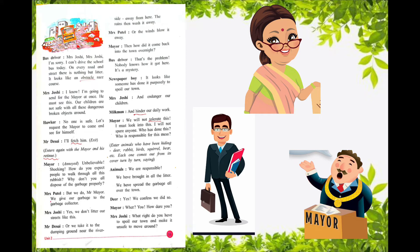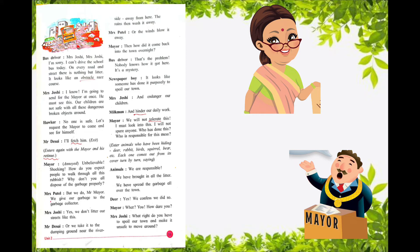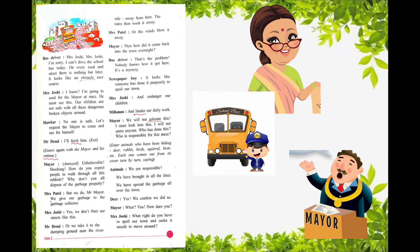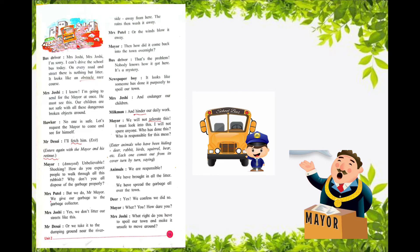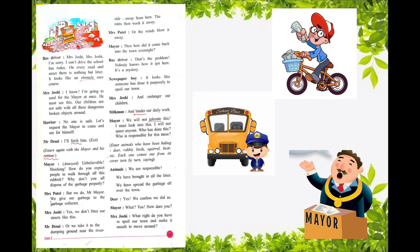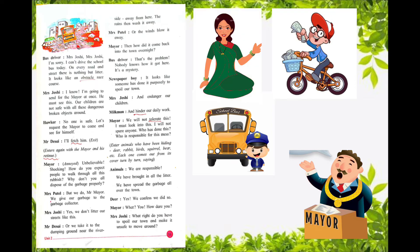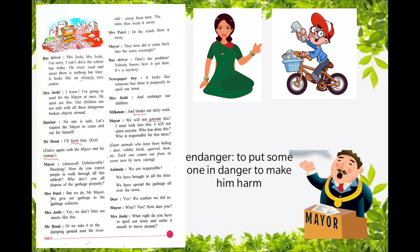The mayor asked, 'Then how did it come into the town overnight?' The bus driver said, 'That's the real problem — nobody knows how it got here. It's a mystery.' The newspaper boy said, 'It looks like someone has done this purposely.' Mrs. Joshi said, 'And to endanger our children.' Underline 'endanger' — meaning to put someone in danger of being harmed. She said it must have been done purposely to put the children in danger.